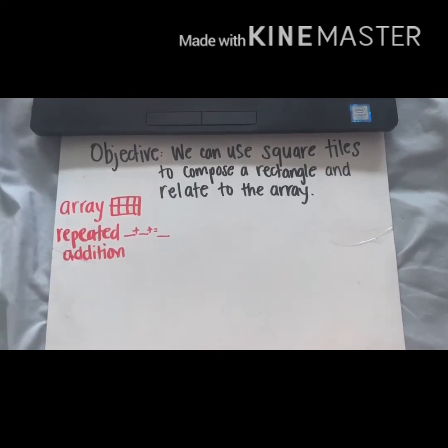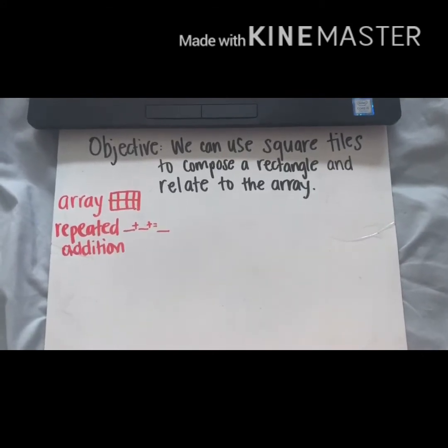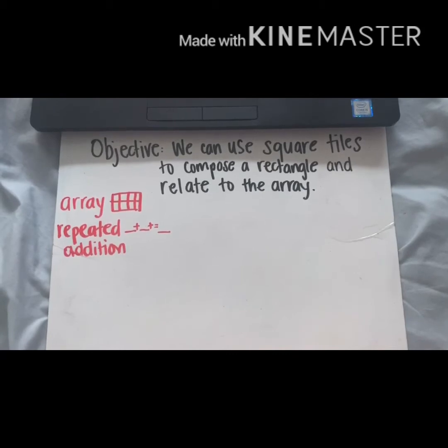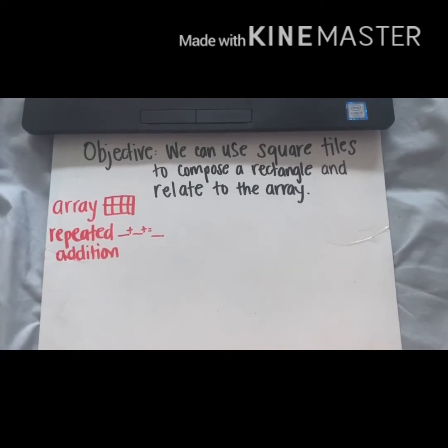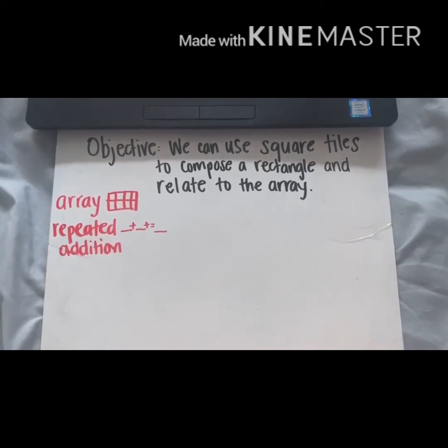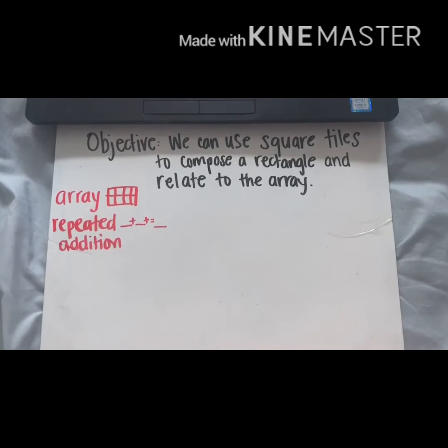All right, read it with me on three. One, two, three. We can use square tiles to compose a rectangle and relate it to the array.